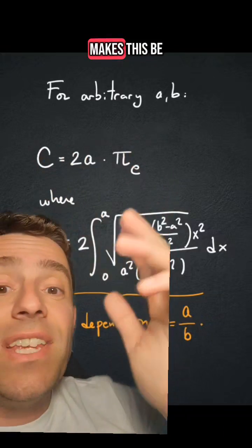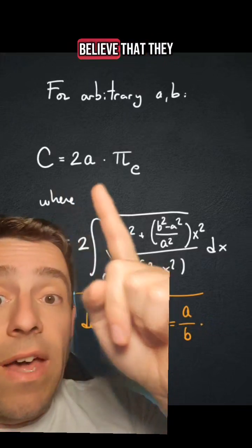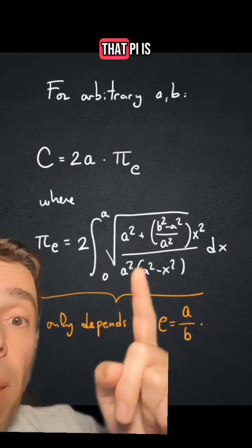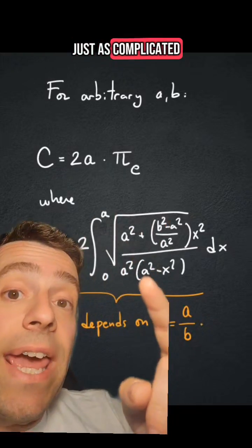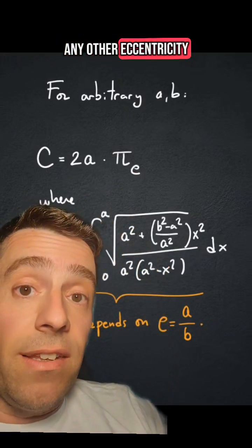which makes this be a closed-form formula which either you believe that they are all closed-form formulas, or you believe that π is just as complicated as any other π for any other eccentricity.